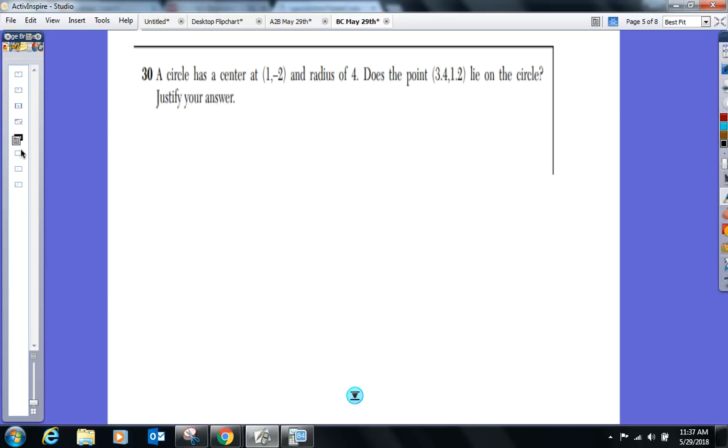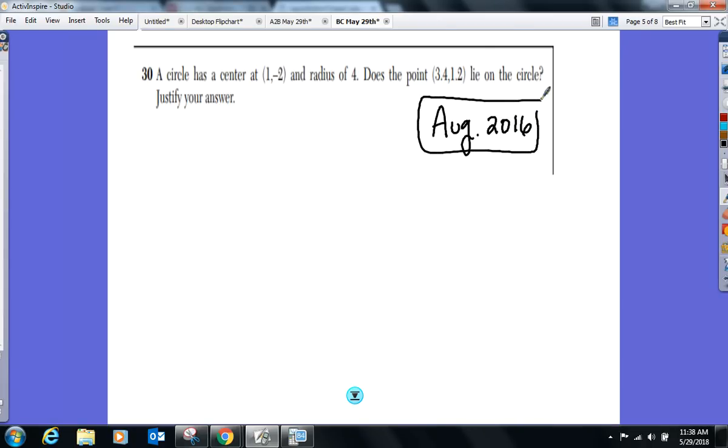Number 30. Just keeping you updated, not scaring or threatening—it's just three weeks from today is this test. It's one of the last ones I think you guys are taking. Unless you're taking chemistry, it's going to be the last one you take. Thursday morning, 8 o'clock. I'm sure I'll have a review session that Saturday before, Monday night. I'm sure I'll stay here too if it's going to be on Tuesday morning. All right, here we go, number 30. A circle's got a center at (1, -2) and a radius of 4. Does the point (3.4, 1.2) lie on the circle? Show some work to justify your answer.